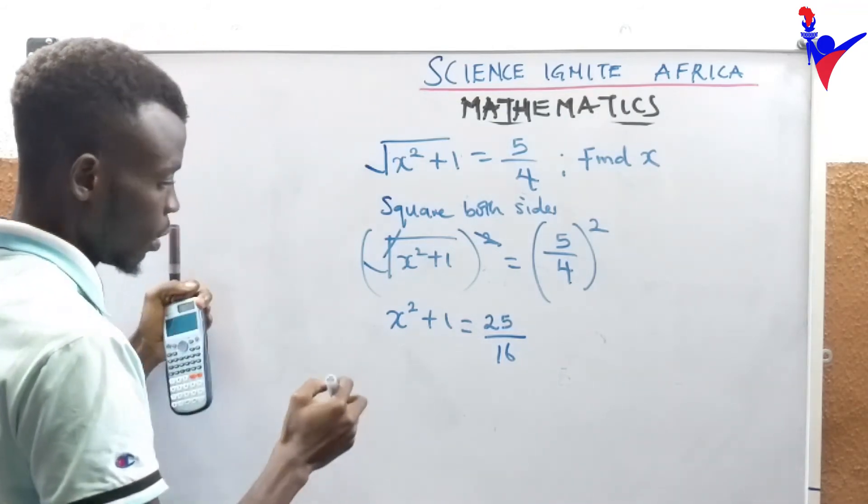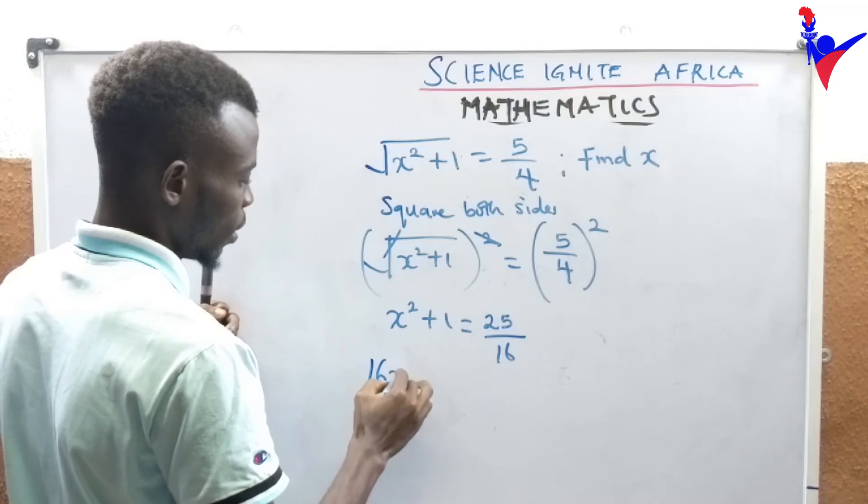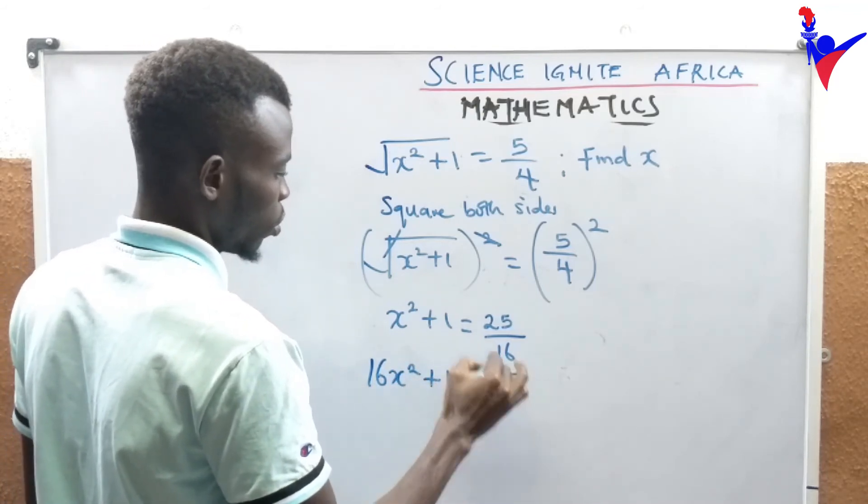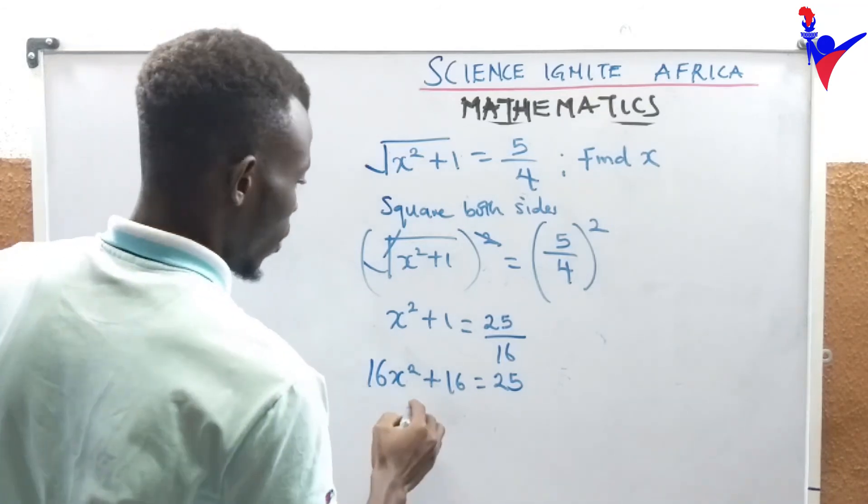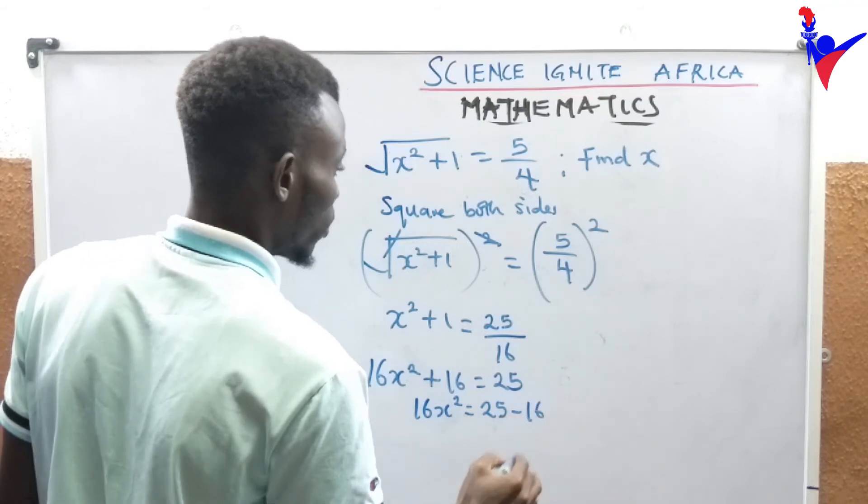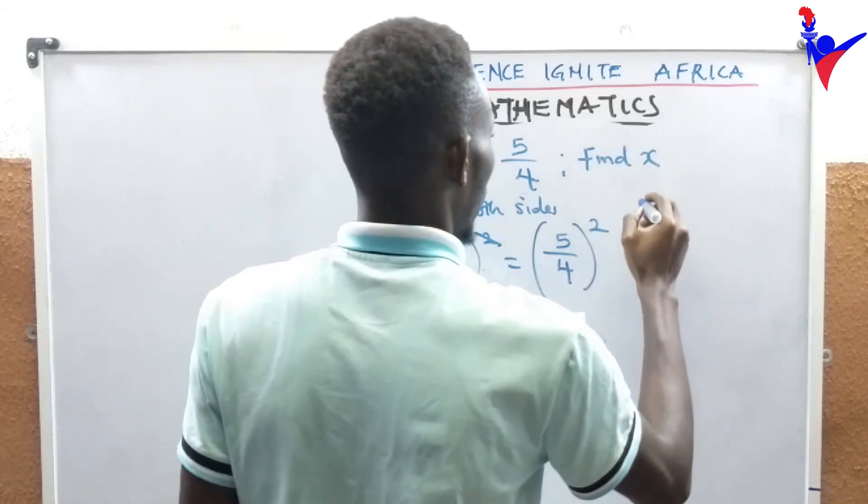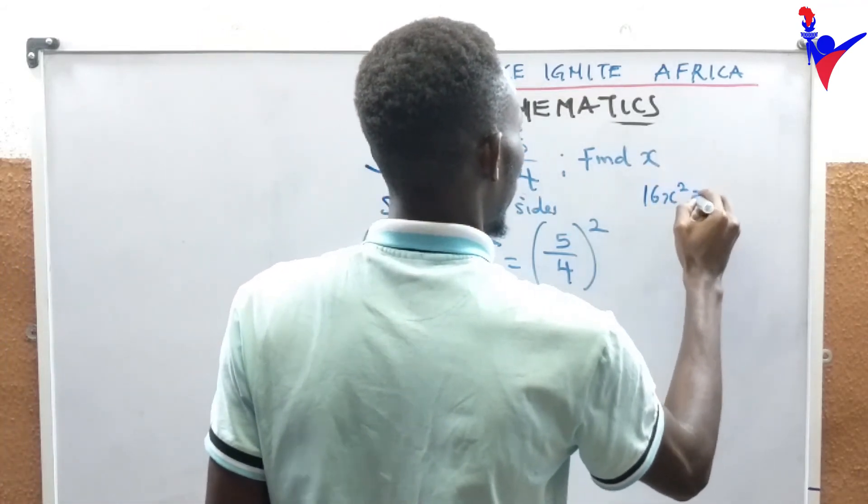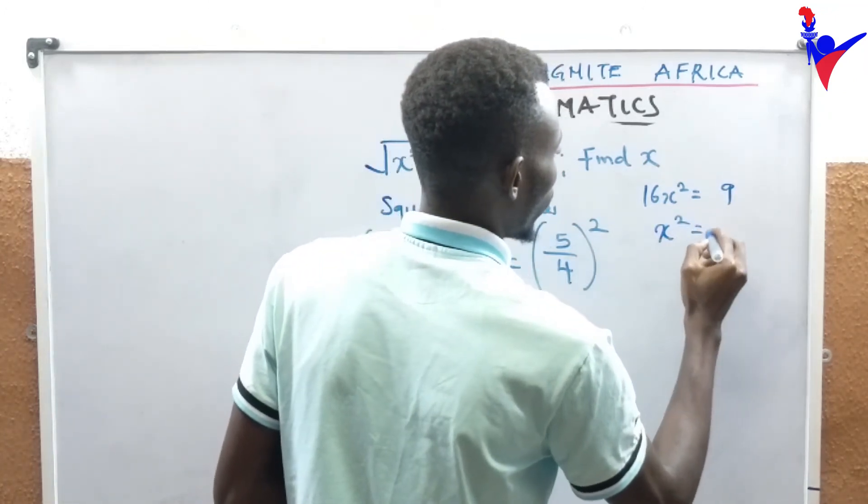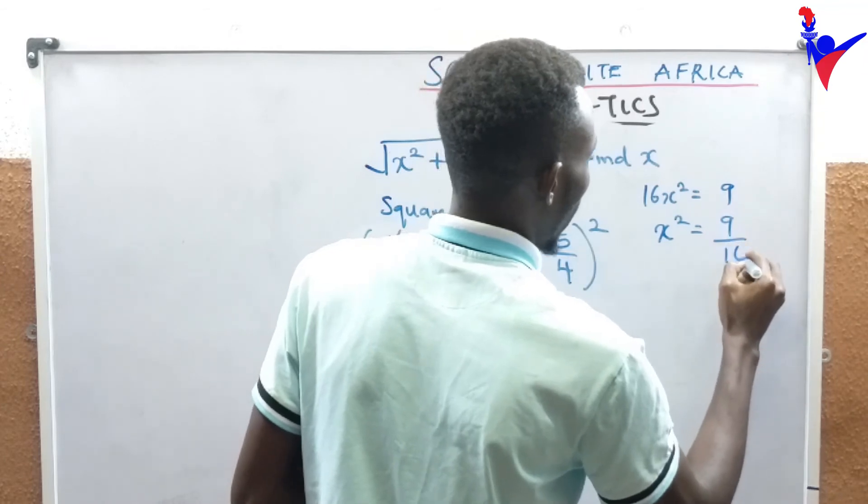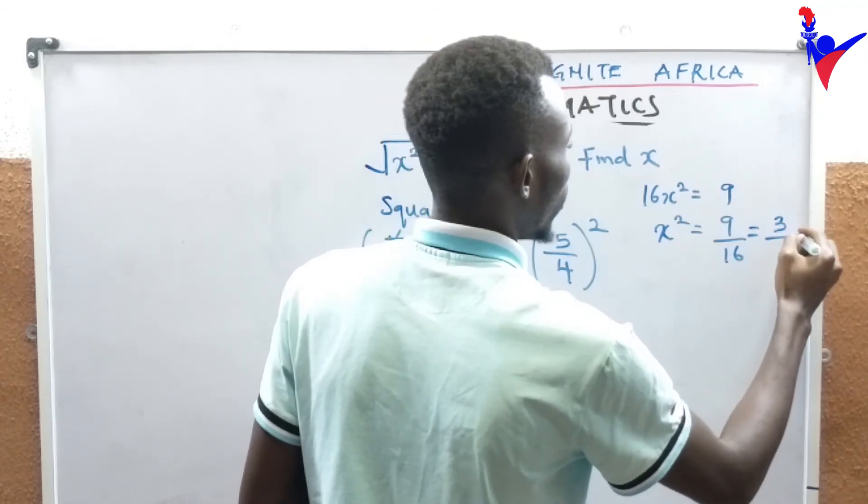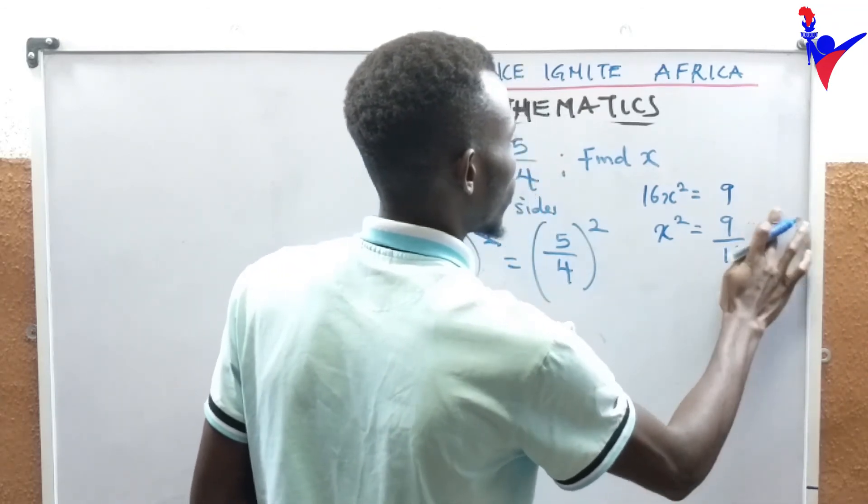Let's go, then what's the next thing? You might have to cross multiply. This will be 16 times x squared plus 16 equals 25. Then we have 16x squared equals 25 minus 16. Then that will be 16x squared equals 9. Then we have x squared equals 9 divided by 16.